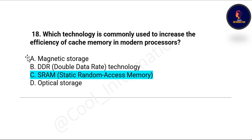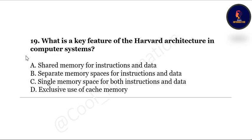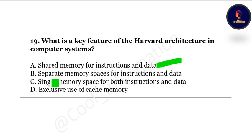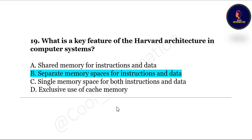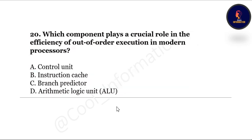This is the second-to-last question: what is the key feature of the Harvard architecture in a computer system? Options are: shared memory for instructions and data, separate memory space for instructions and data, single memory space for both instructions and data, and exclusive use of cache memory. The correct option is B — separate memory space for instructions and data.